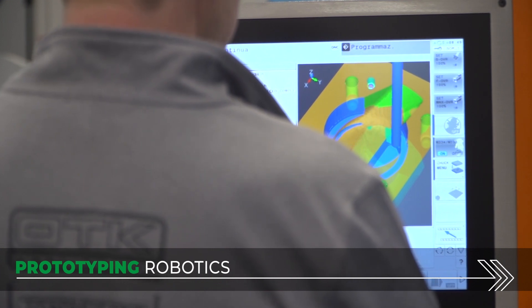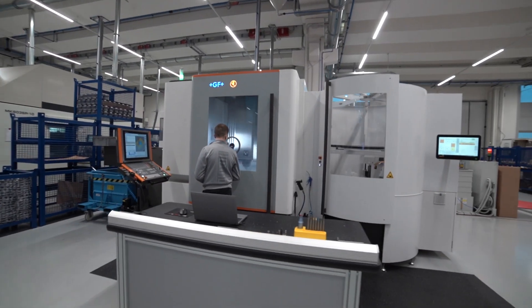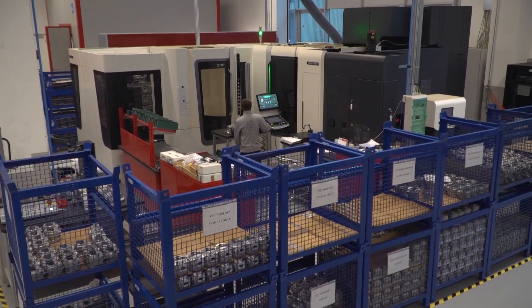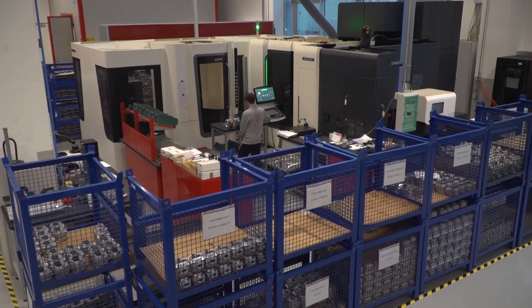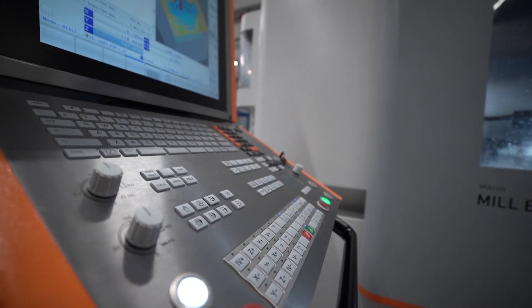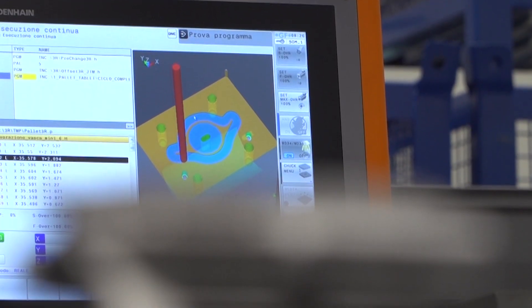In the OTK Kart Group's engine division, it is not only the standard manufacturing process which is fully automatic, thanks to four and five axis CNC machines, but also prototyping of the various components. For example, heads, crank cases, cylinders and much more being developed is fully computerized.